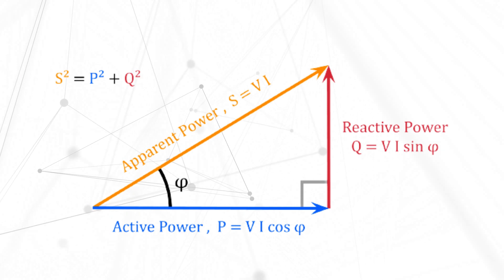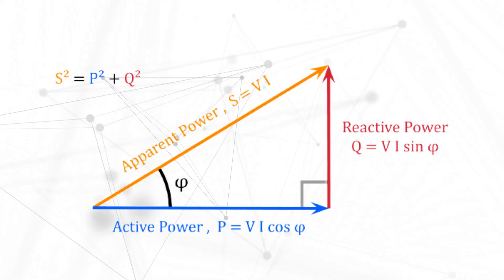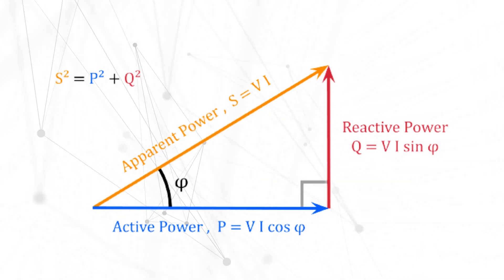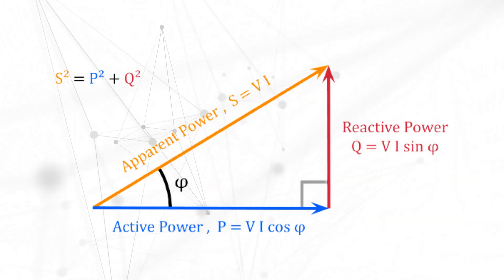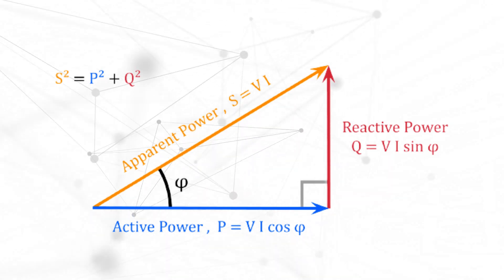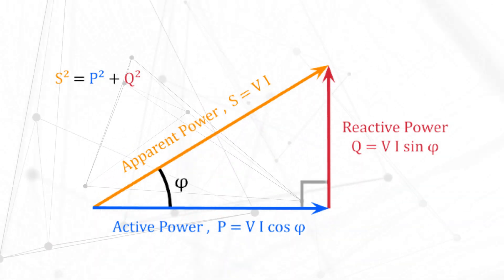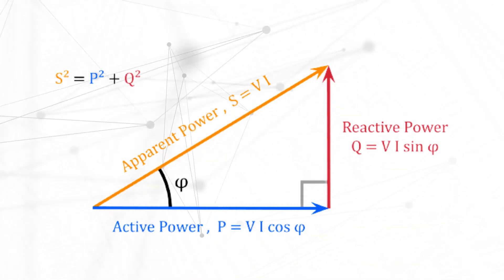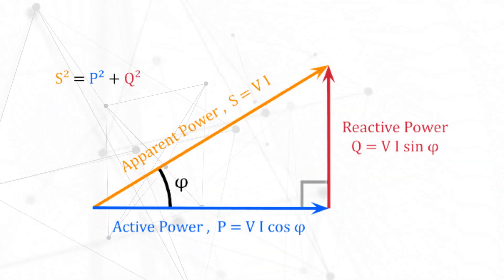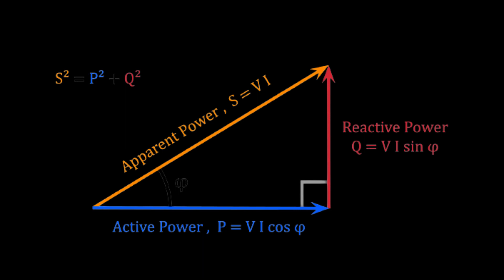Real power, reactive power, and apparent power form a power triangle. The power factor is the cosine of the angle phi between the real and apparent power vectors in this triangle.